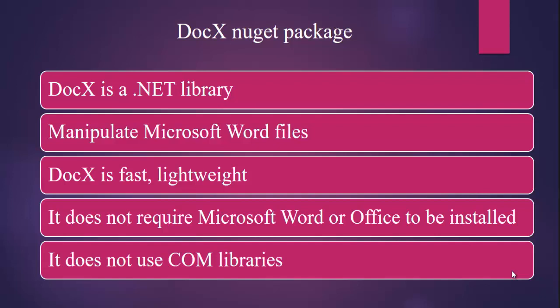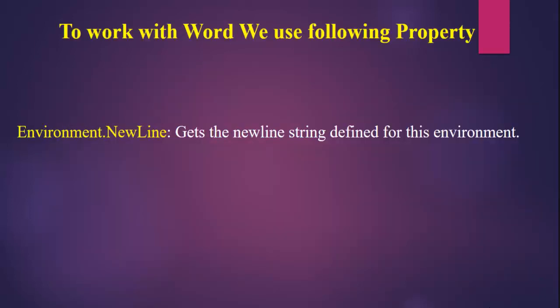Here we use the DocX NuGet package. DocX is a .NET library that manipulates Microsoft Word files. DocX is fast, lightweight, and it does not require Microsoft Word or Office to be installed, and it does not use COM libraries. To work with Word, we use the property Environment.NewLine, which gets a new line string defined for this environment.